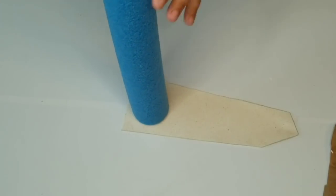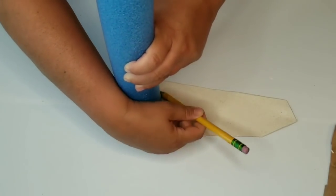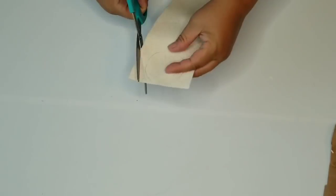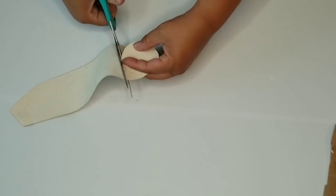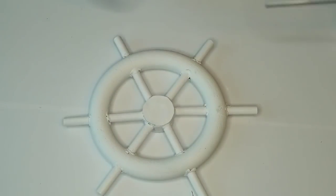So now I'm using the pool noodle once again as just a measurement, I guess. Just to kind of draw out a circle on a piece of canvas that I had left over because I want to cover that blue pool noodle. So I'm going to glue it right on top and it worked perfectly.